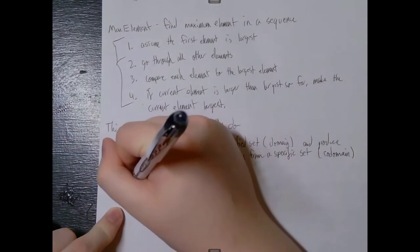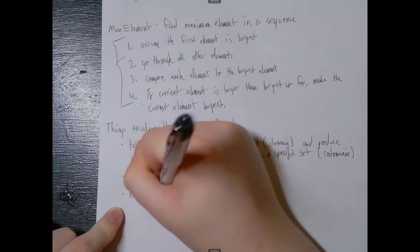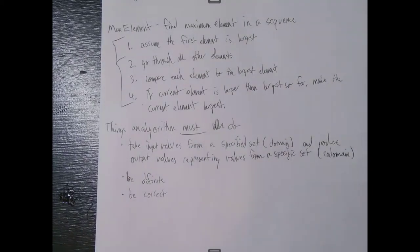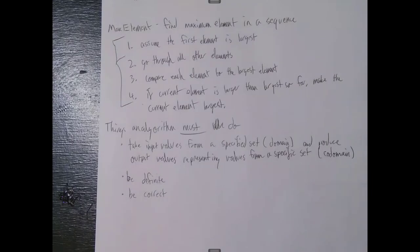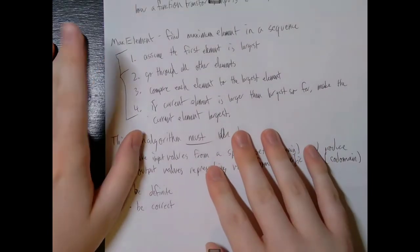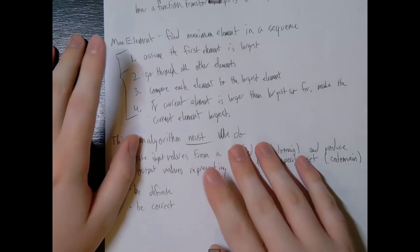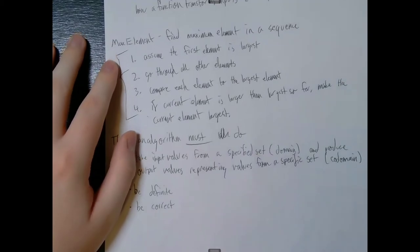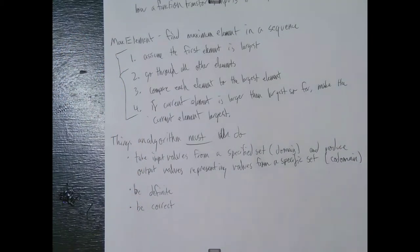The next thing it must do is be correct, which seems obvious. What it means to be correct is that for each input, the algorithm should actually produce the output we are looking for. For example, for max element, an algorithm that solves max element should give us the maximum element of a sequence — nothing other than the maximum element.